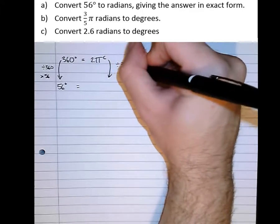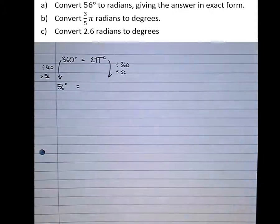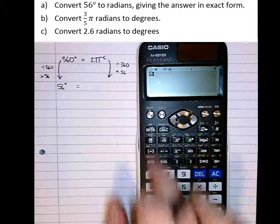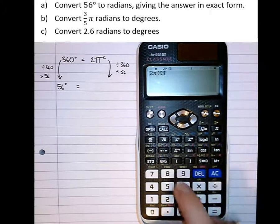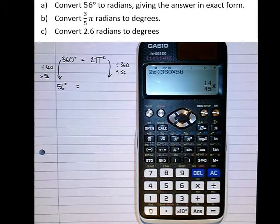Now by proportion, if we do exactly the same thing to the right hand side, divided by 360, times 56, we end up with 14/45 π.